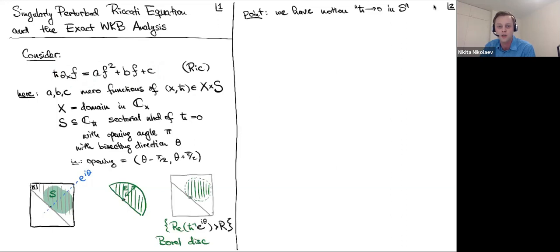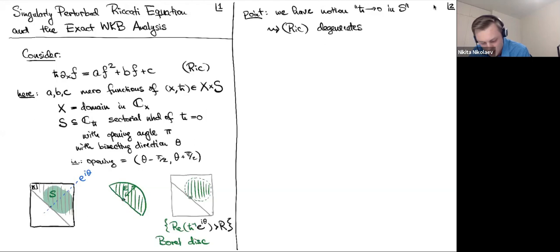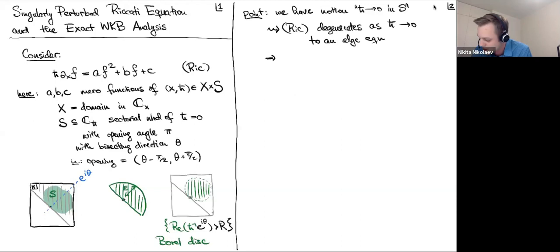This is a typical situation in singular perturbation theory: you have a family of problems depending on h-bar, and there is a particular degeneration of that family where it has a completely different structure. So what I am trying to discuss today is a problem in singular perturbation theory. The Riccati equation degenerates as h-bar goes to zero to an algebraic equation.